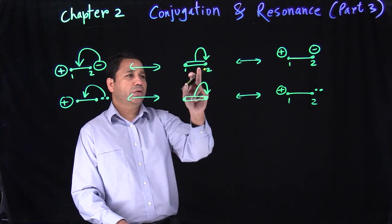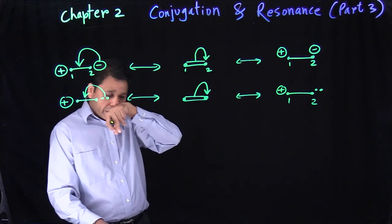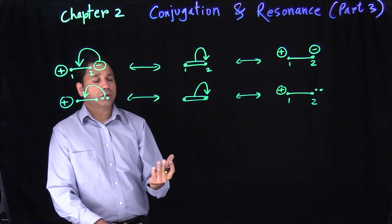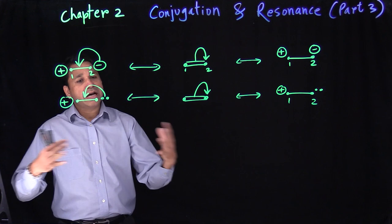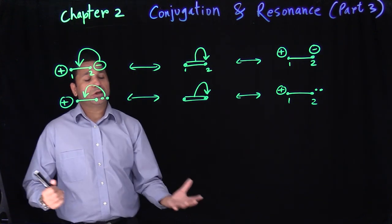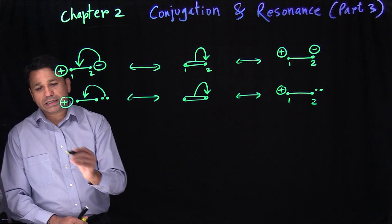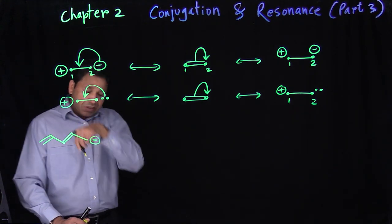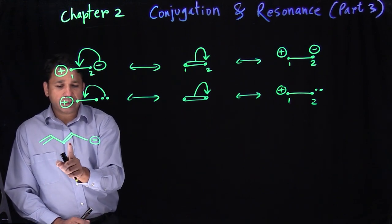Now we'll look at how to combine two or more conjugations in one structure. Let's say we have an example: double, single, double with a negative charge. So we have double, single, double and also double, single, negative. When you have two different conjugations — it's not a strict rule, but it makes life easier — if you have a negative charge or electron pair, you start with it.